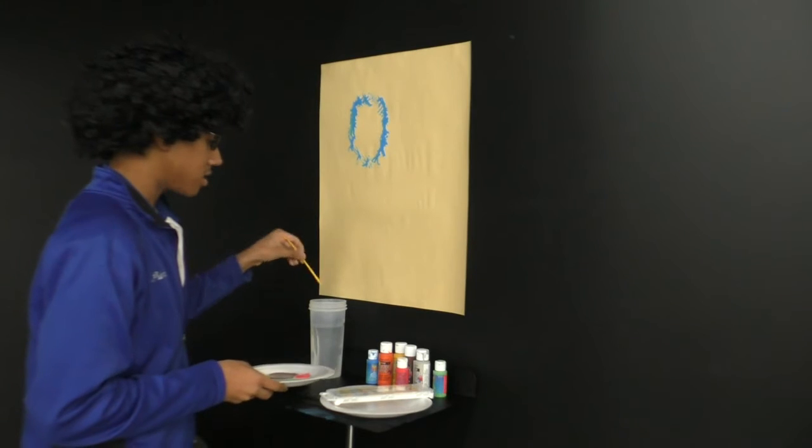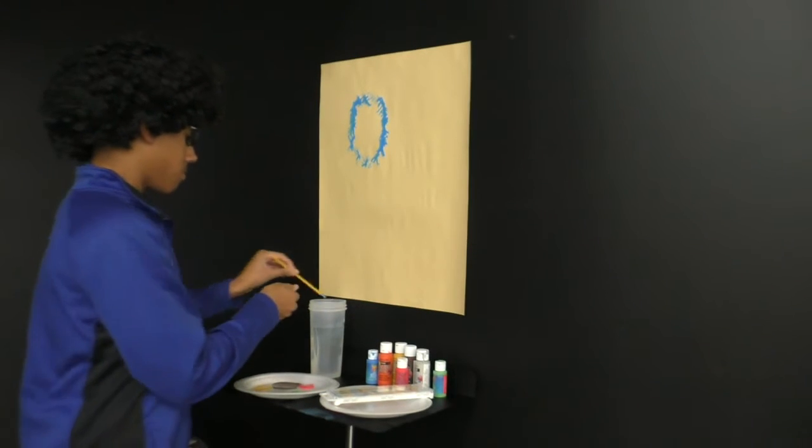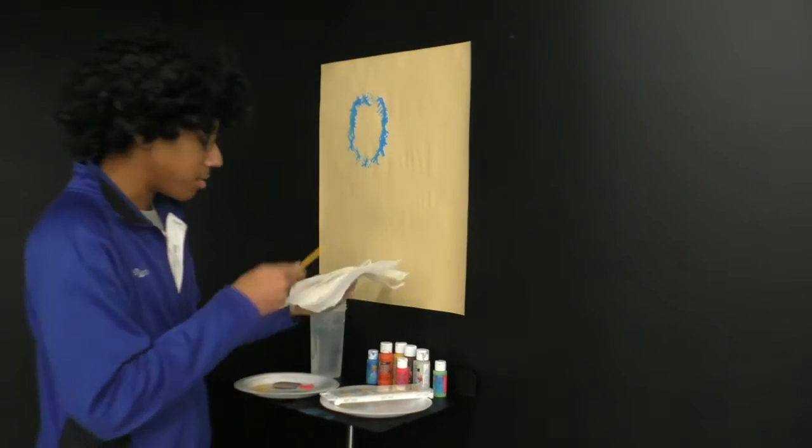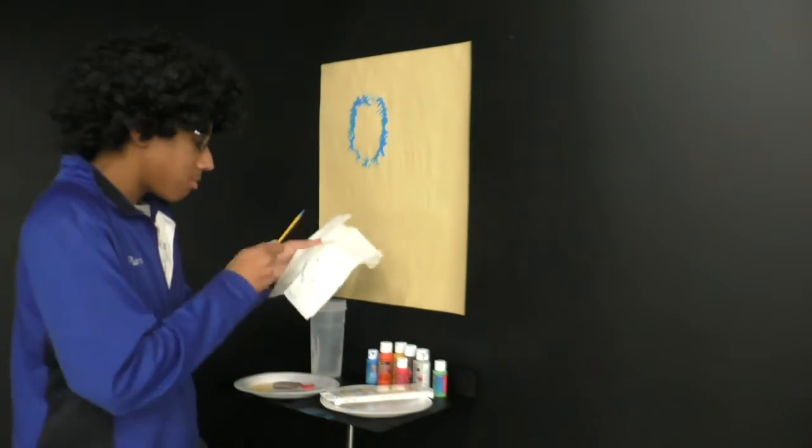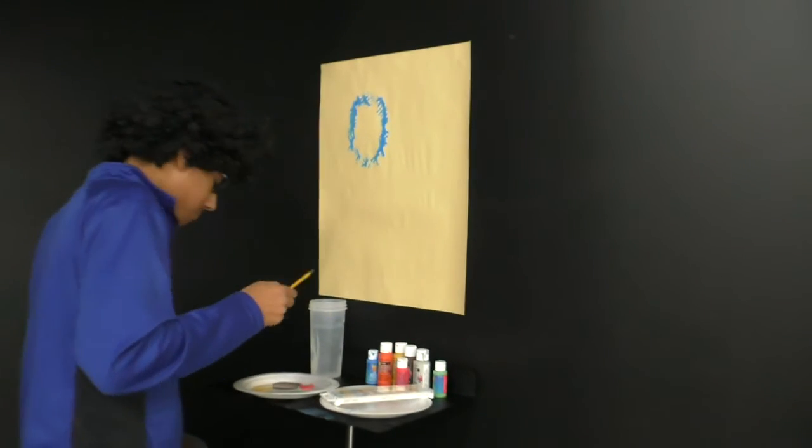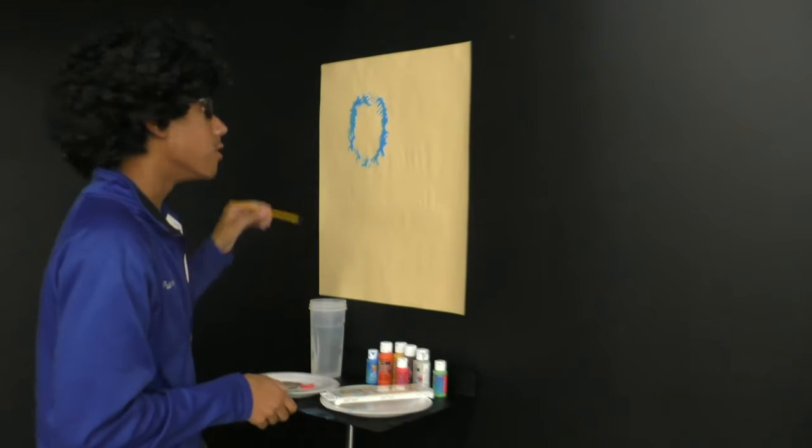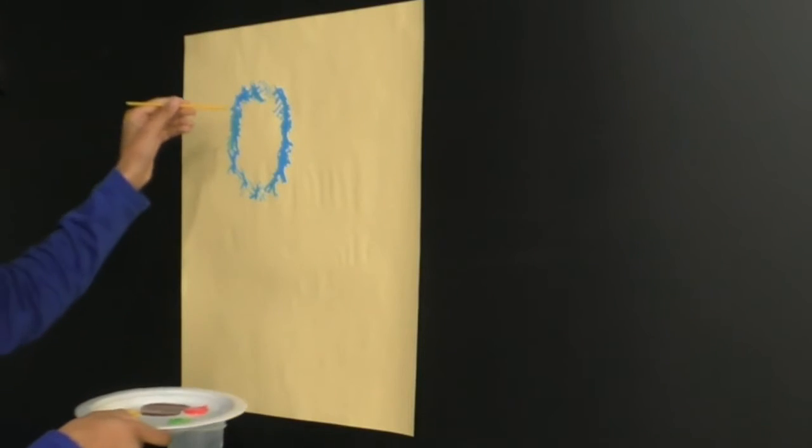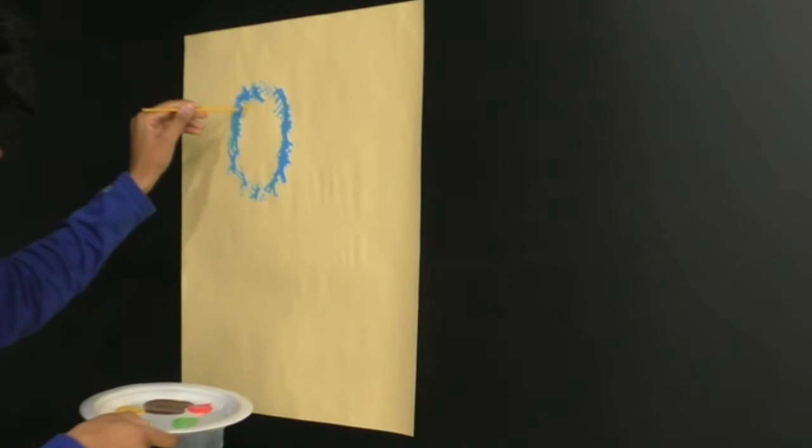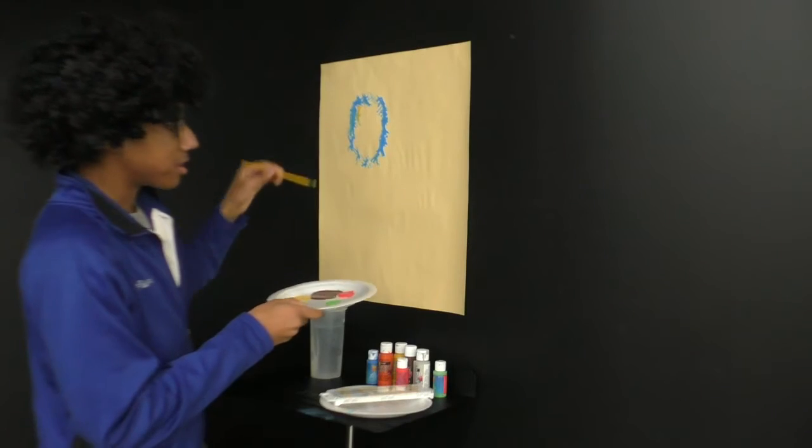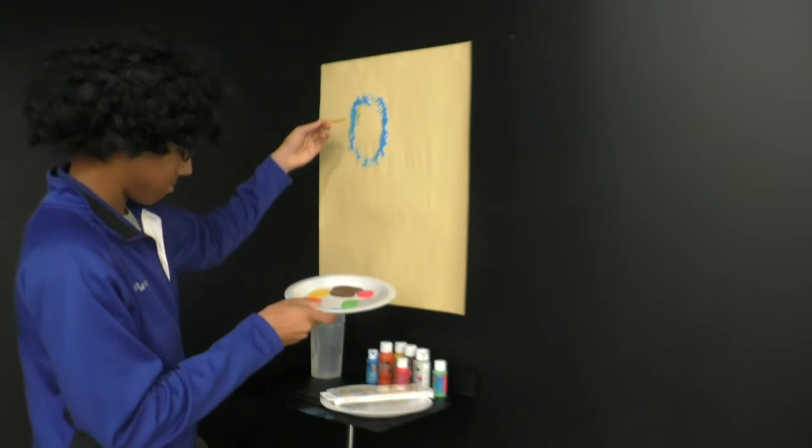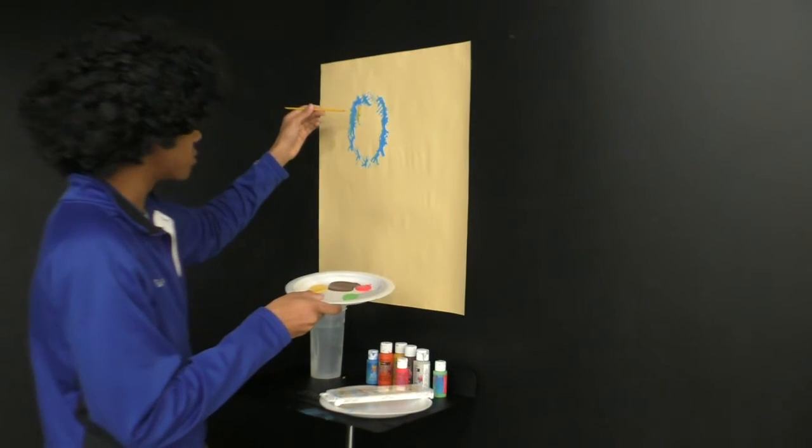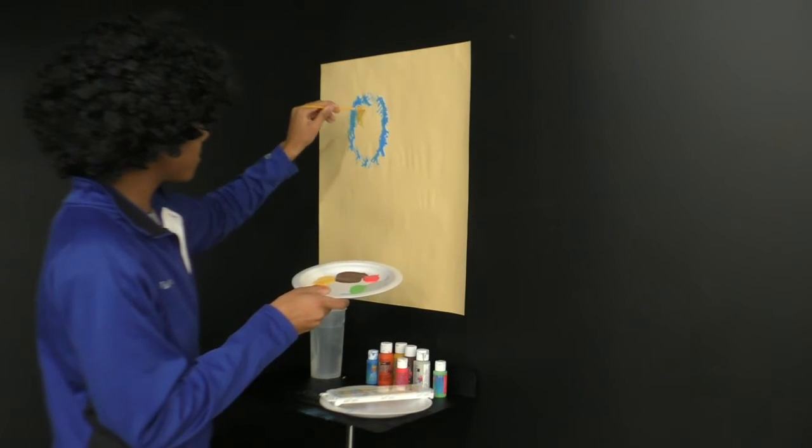Now, we have to rinse it out and beat the mess out of the paintbrush. Good enough. Now, we're going to use yellow to fill in his mane. I didn't beat the mess out of it enough. Oops. That's alright.